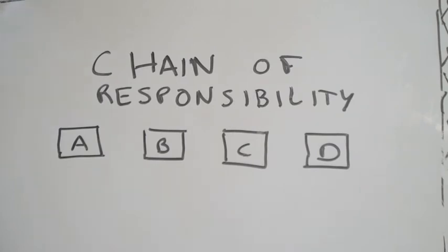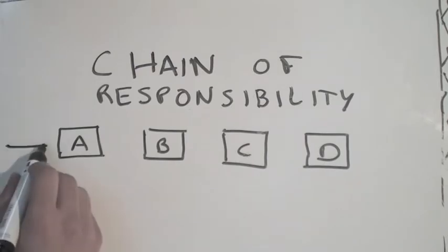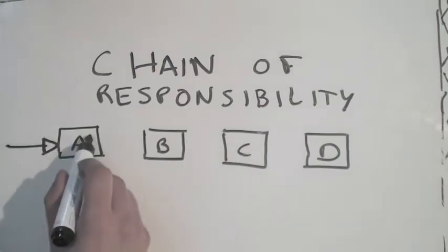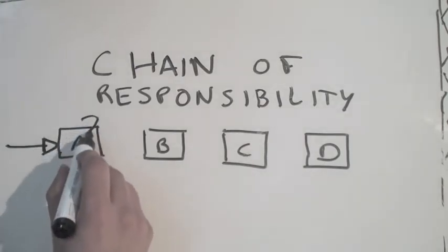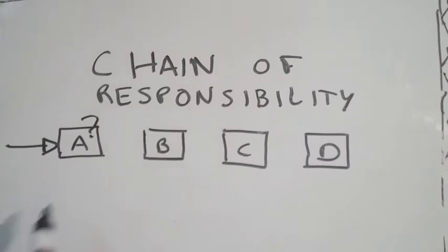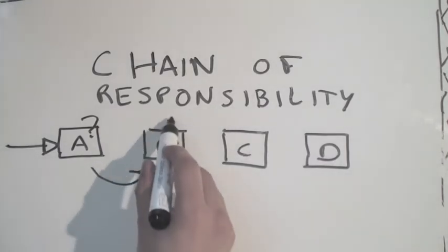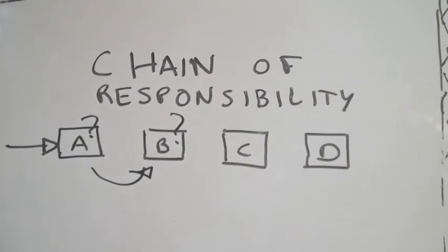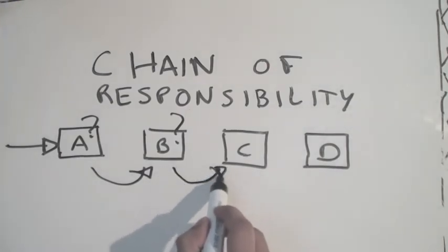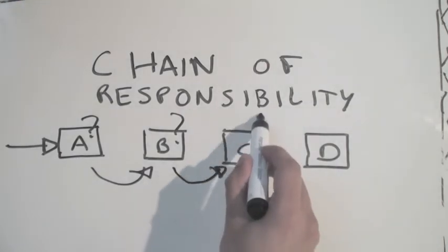With this pattern, you'll be able to propagate a message along a chain of objects until it's taken care of. When you need the request to be handled, you pass this message to the first object in the chain. If it can't handle the message, it will pass the message to the next in the chain, and so on, until the request is handled.